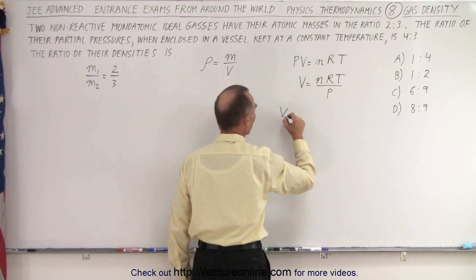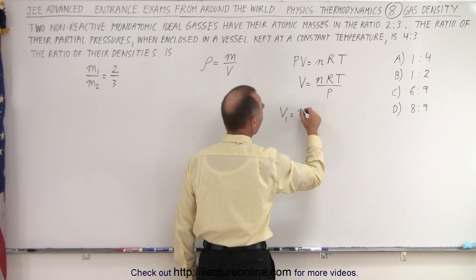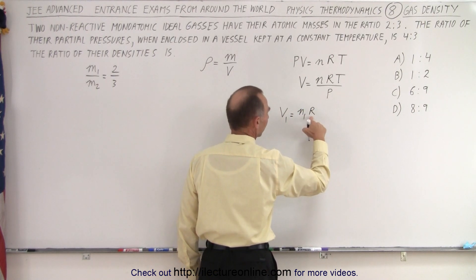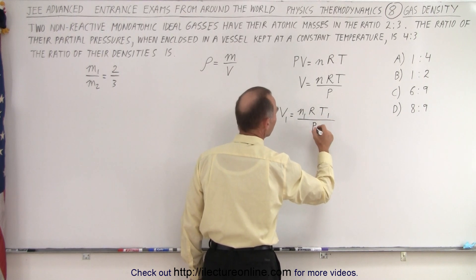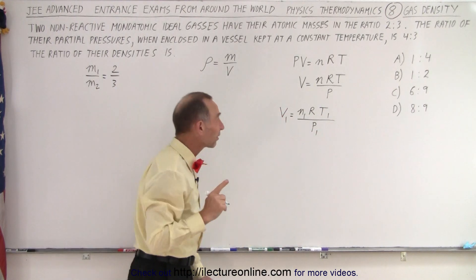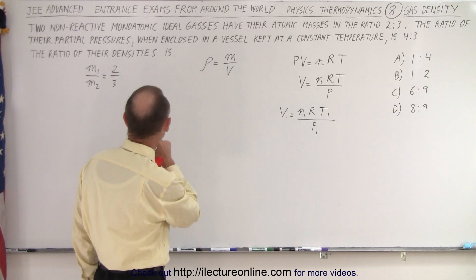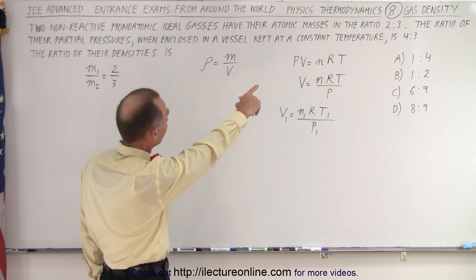So we could say that volume 1 is equal to n1, R is the gas constant, T1 divided by P1. Now notice that they're kept at constant temperature. Yes, constant temperature.